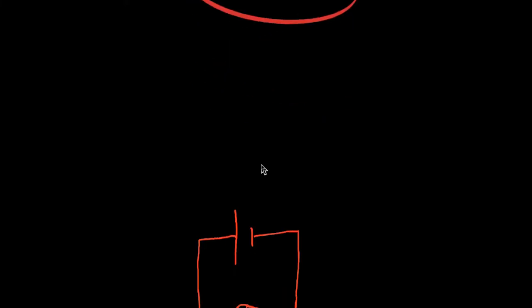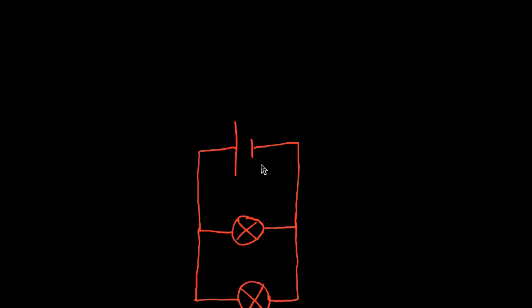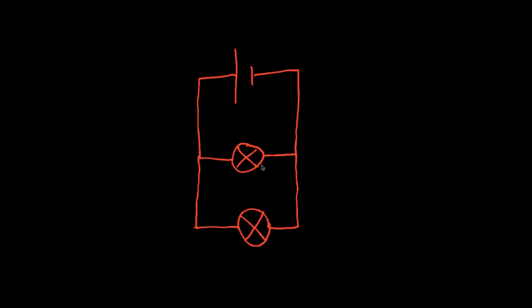So let's dive straight in. Here is a very simple parallel circuit. What you have in a parallel circuit is your power supply — that's always going to be there. In this case it's a cell, could be a battery. And we have two components which are connected in parallel to each other, not in series with each other.